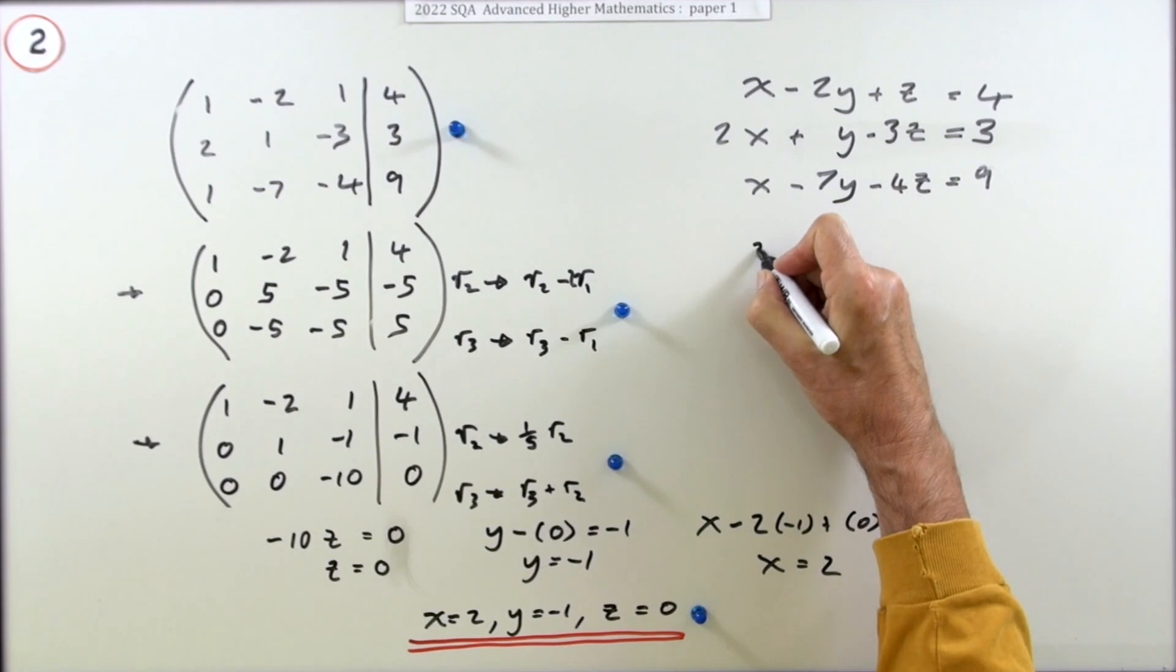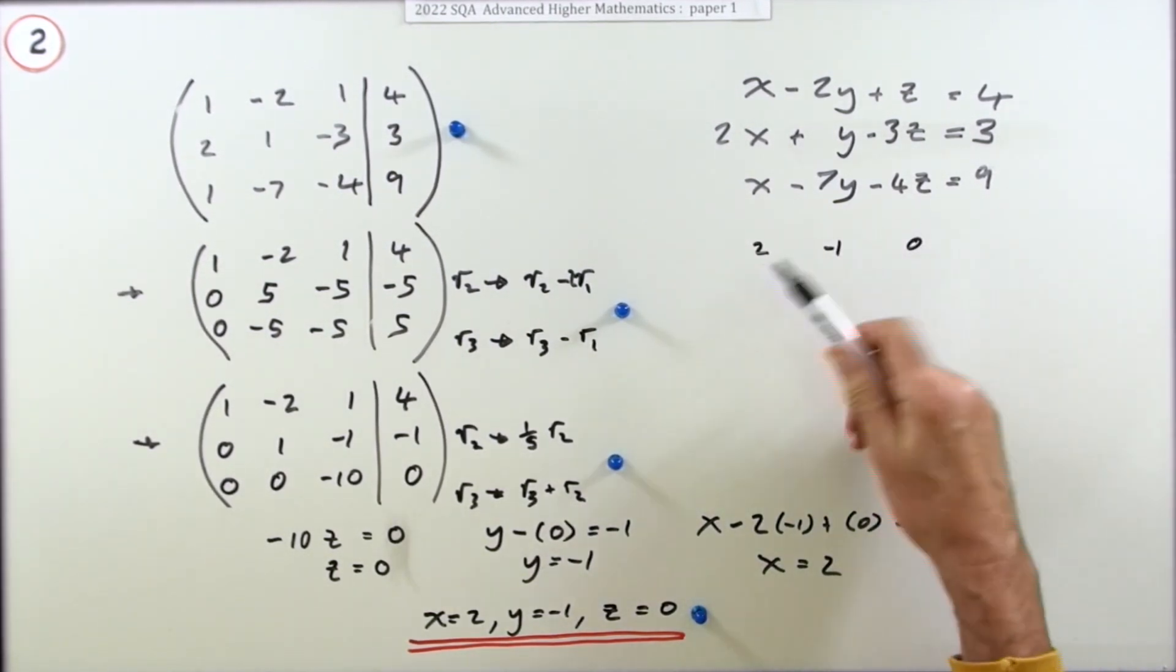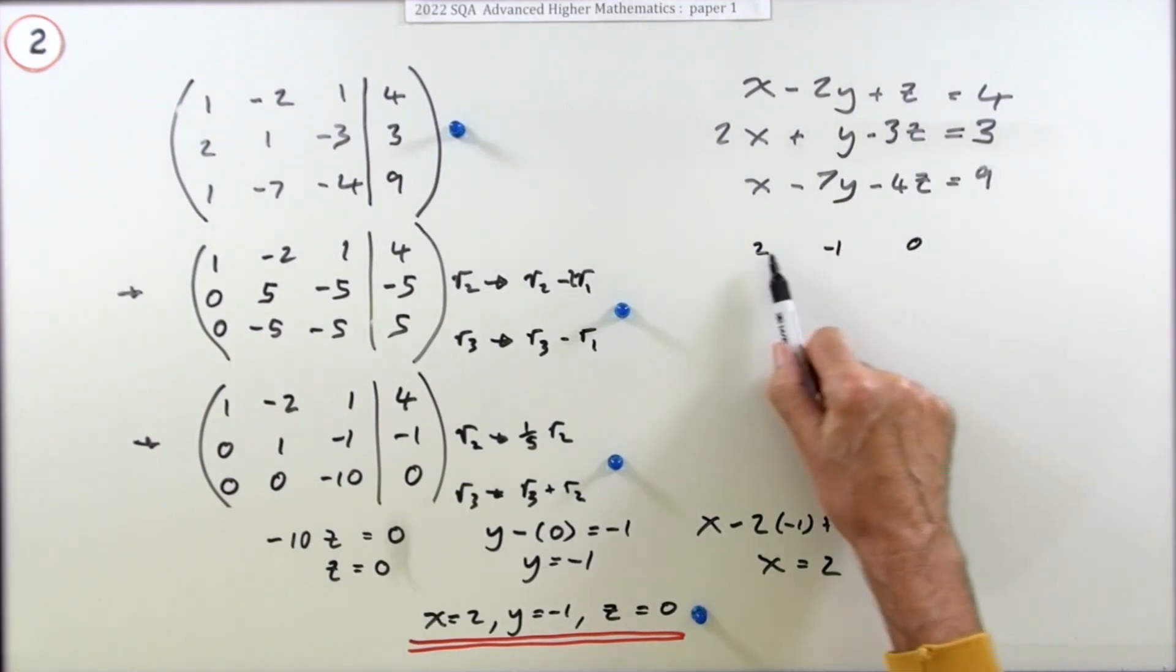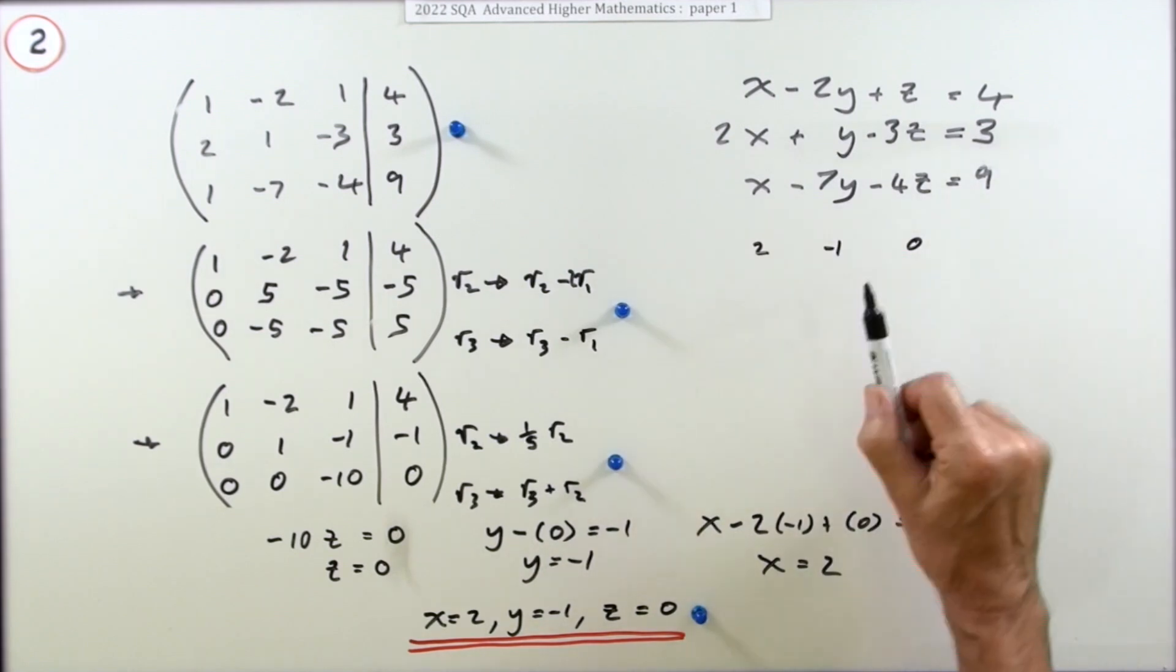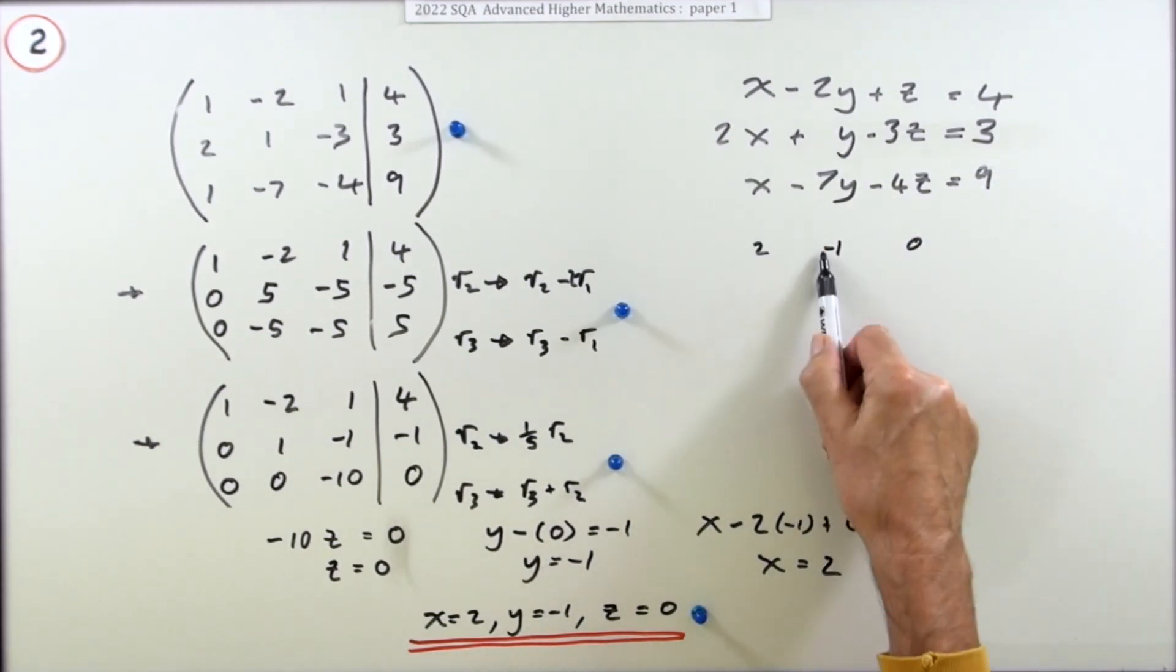So if you're saying that's 2, that's -1, and that's 0, well that makes it even easier because that just knocks out this. I've just got to check if that works. So I've got 2, but that'll be plus 2 is 4, yep. I've got 4 but take away 1 is 3, yep. I've got 2 but that'll be plus 7 is 9, so it's all done.